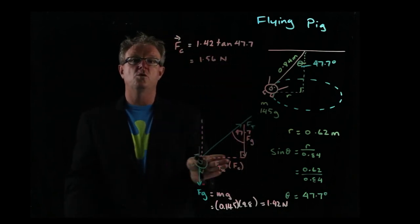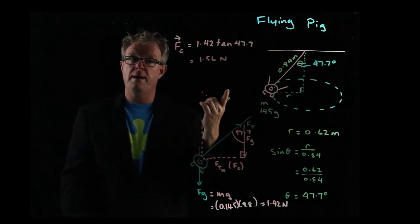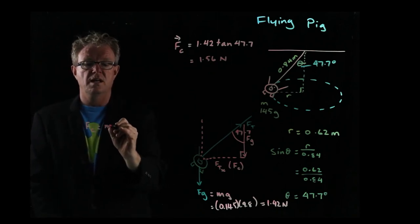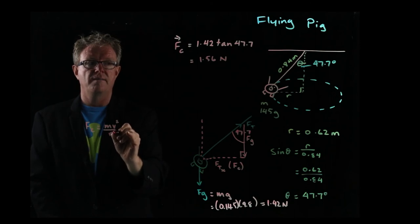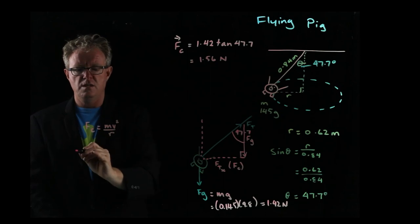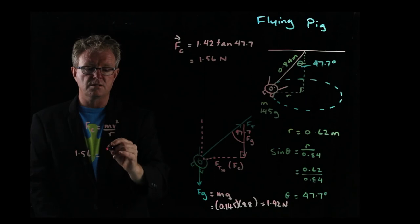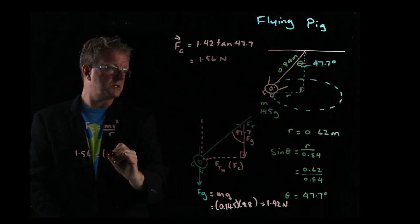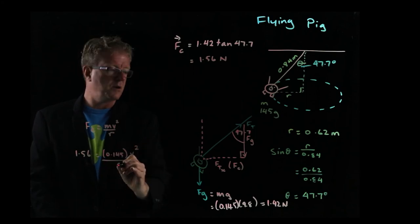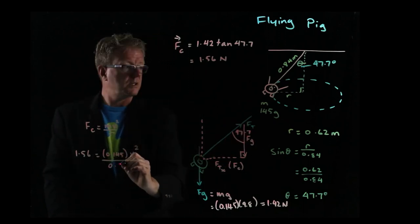Now we use our understanding of centripetal force. Centripetal force equals mv²/r, which equals 1.56. We want velocity, so we have 1.56 equals 0.145 v² divided by r. In this instance, r is 0.62 meters.